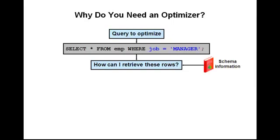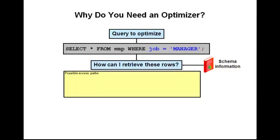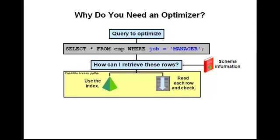Based on schema information stored in the data dictionary, the optimizer can determine possible access paths. Let's assume an index exists on the job column. The optimizer could use that index to retrieve the rows corresponding to the manager ones. But it could also do what is called a full table scan — simply scan through all the rows in the table and filter the non-manager ones.